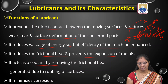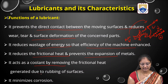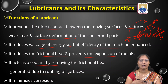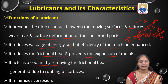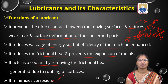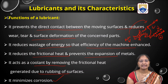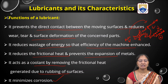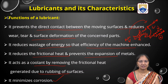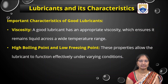Lubricants act as a coolant by removing the frictional heat generated due to rubbing of surfaces. They also minimize corrosion, as they are organic substances which generally prevent corrosion. So, a lubricant acts as a coolant, a corrosion preventive agent, and reduces waste of energy and money, reduces heat and friction. These are the functions of a general lubricant.